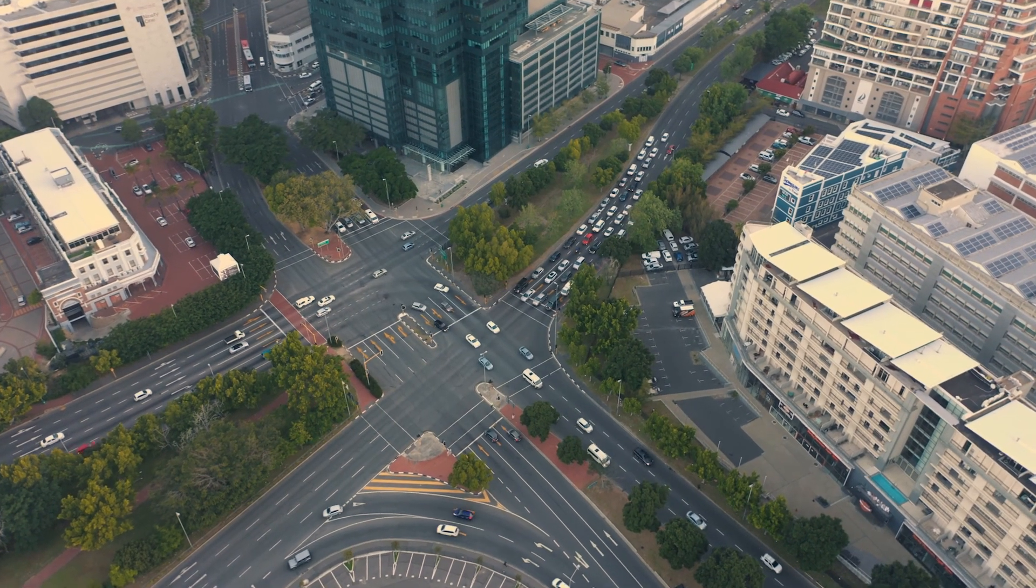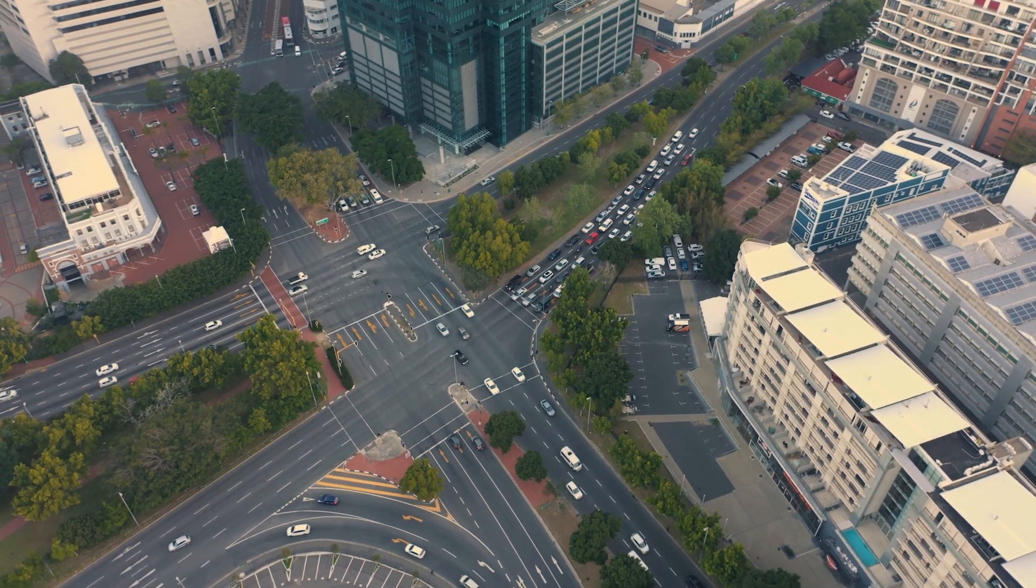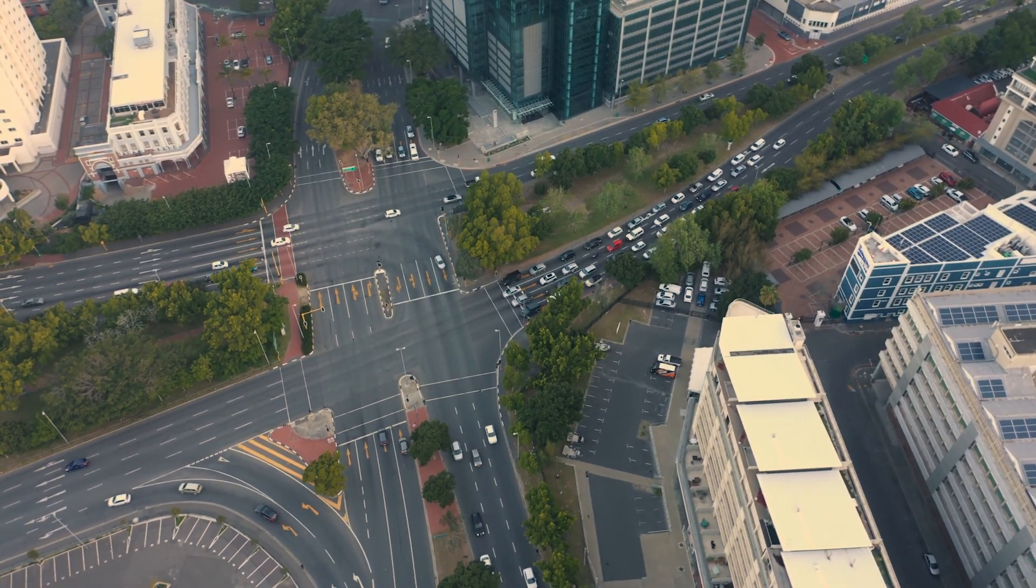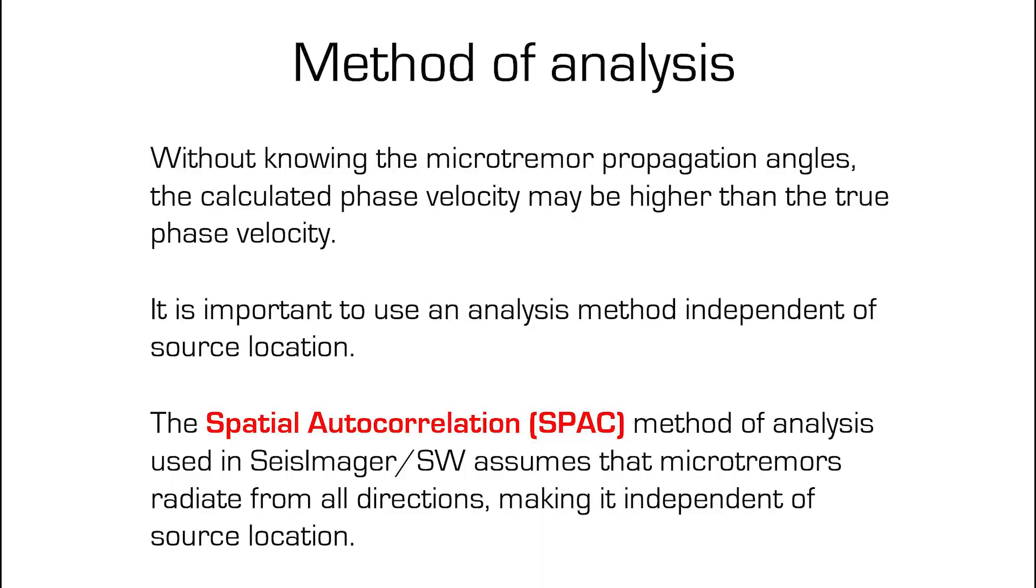When planning a passive MESW survey, using survey geometry which best accounts for local surface waves results in better data. Since microtremors propagate in all directions, and the propagation angles are unknown for direct calculation of phase velocity, then the spatial autocorrelation method or SPAC method can be used to calculate phase velocity for the different frequency surface waves recorded.